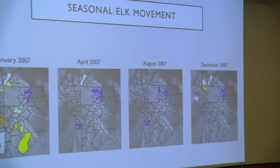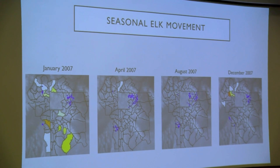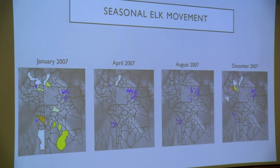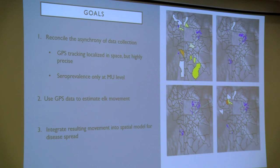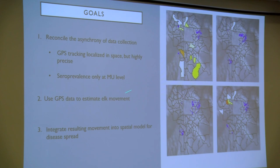Our goal is to take this data and provide a map showing in much clearer detail where this disease has spread from and where it might be going in the future. The GPS tracking data is localized in space but highly precise; the seroprevalence data is available over the whole spatial domain but very patchy in time. If we pair these together, we can get something more than the sum of their parts. We're going to use the GPS data to estimate elk movement, then integrate that movement estimate into a spatial model for disease spread.